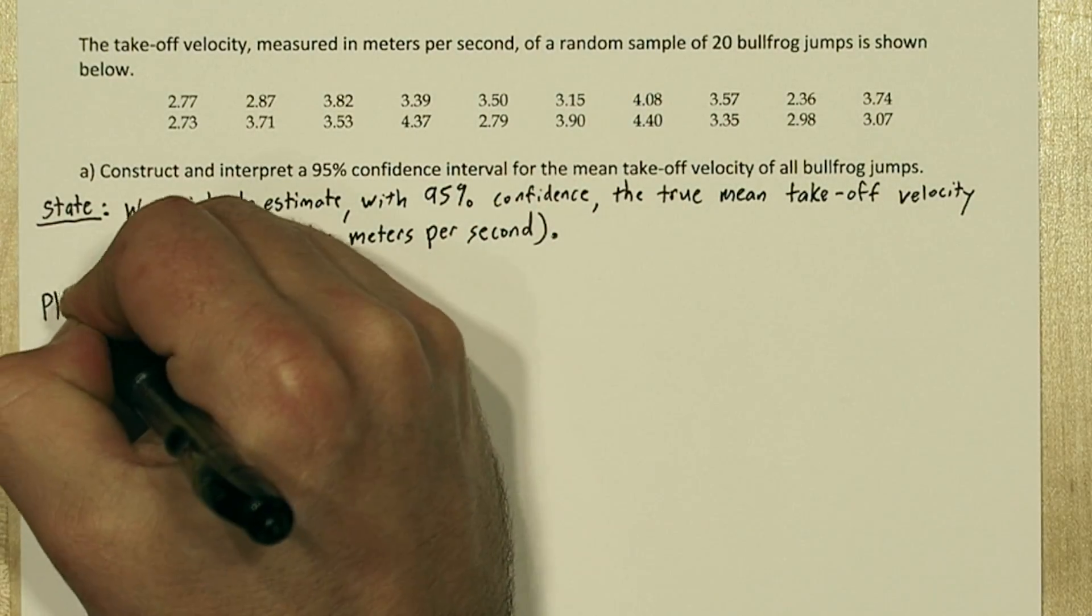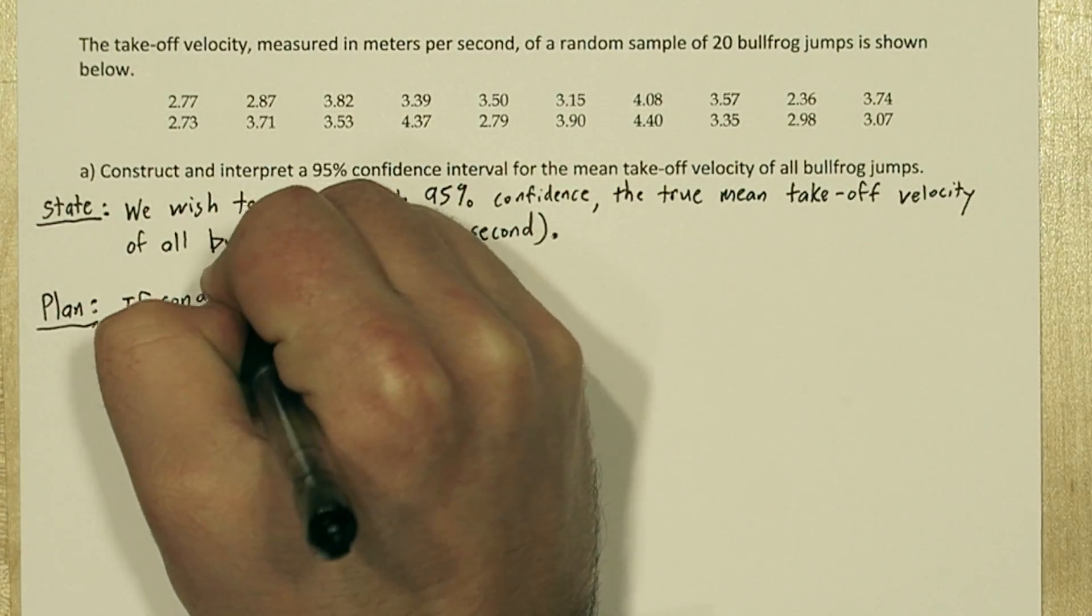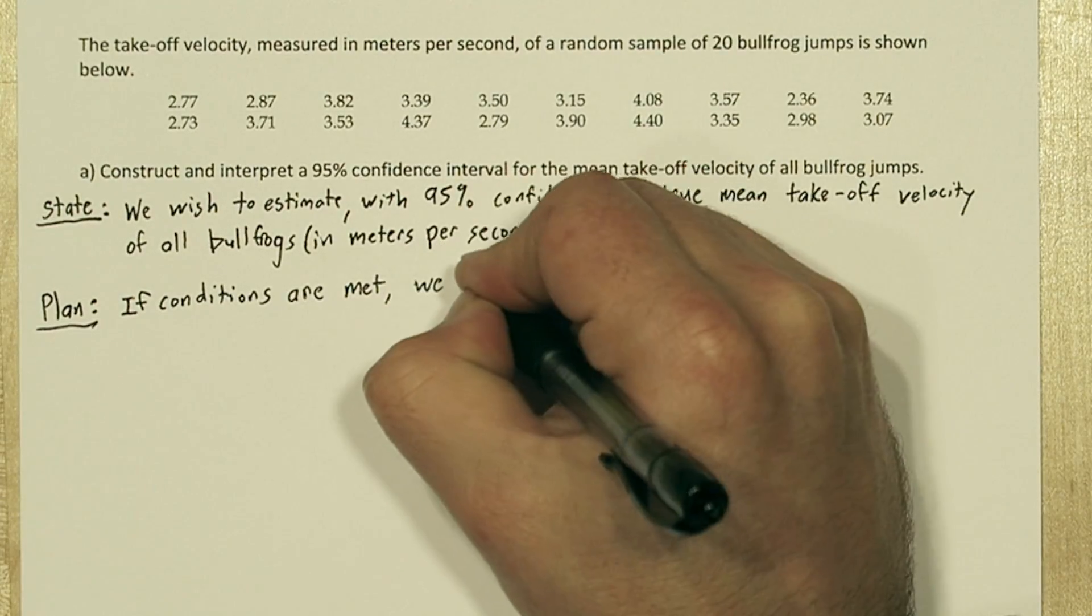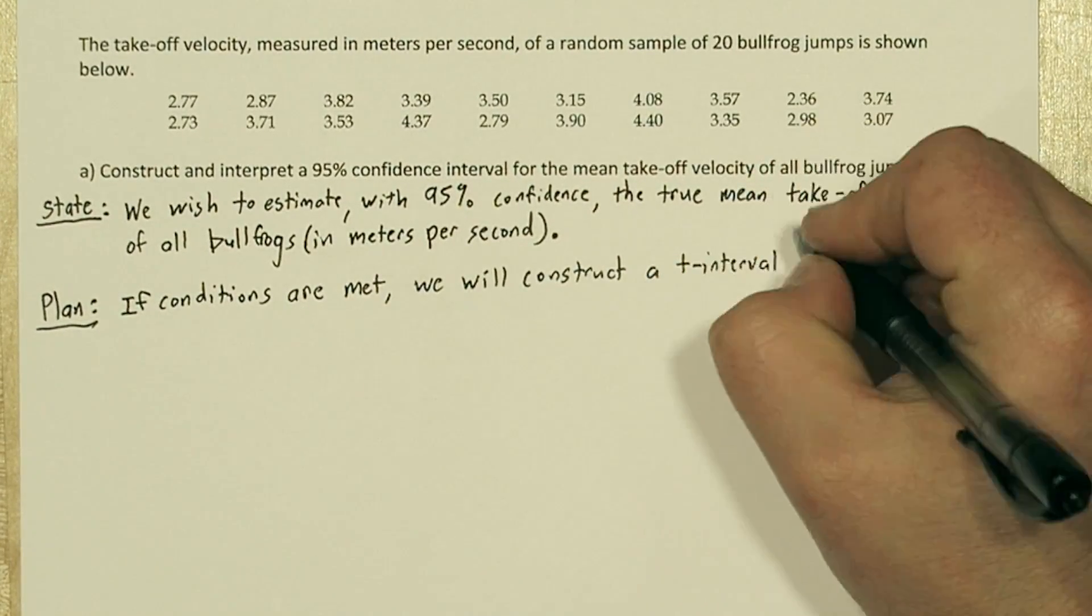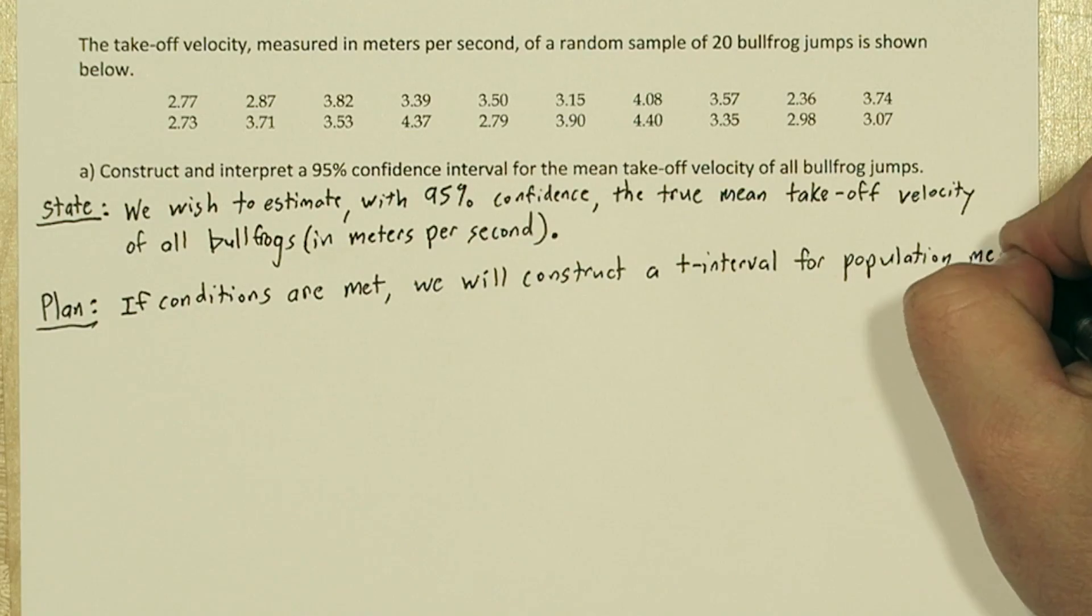In the plan step, we need our inference method as well as the conditions. If conditions are met, we will construct a t interval for population mean. That's our inference method.